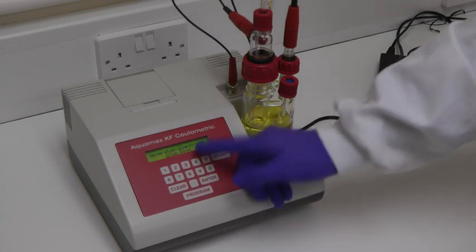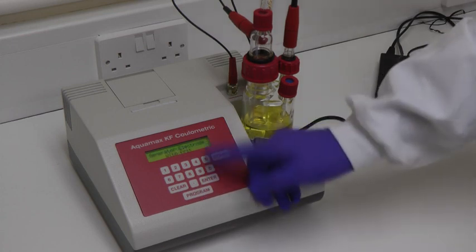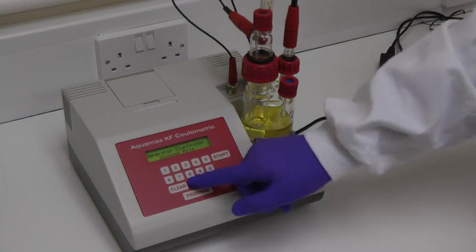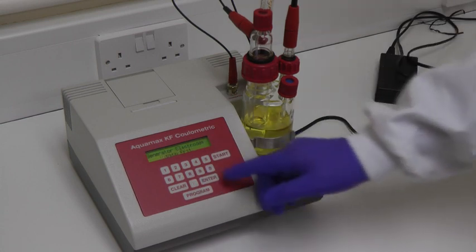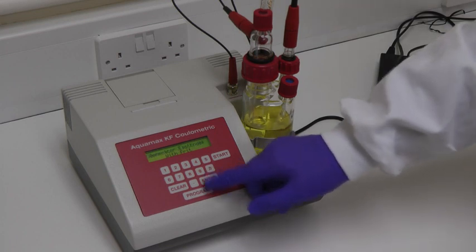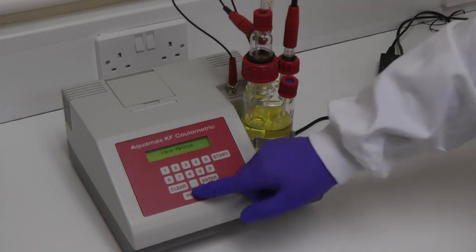The Generator Electrode parameter can be set to either With or Without Frit. This completes the programming, and the method that has just been specified can be saved for future reuse.